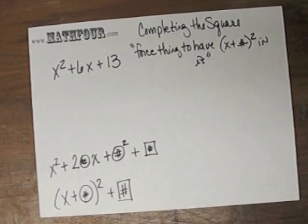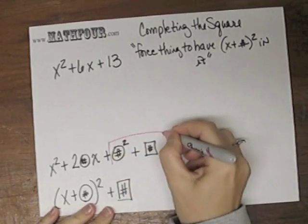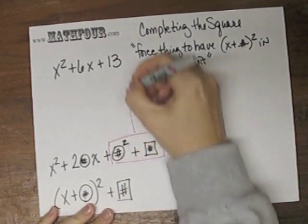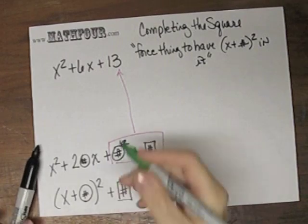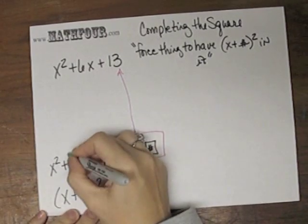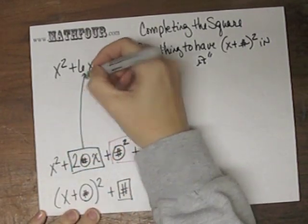So really, this piece here has to end up being 13. And this piece, run away markers, this piece here has to be 6.